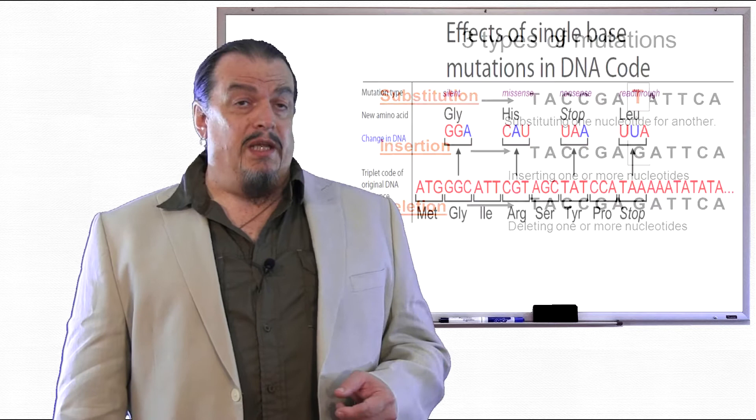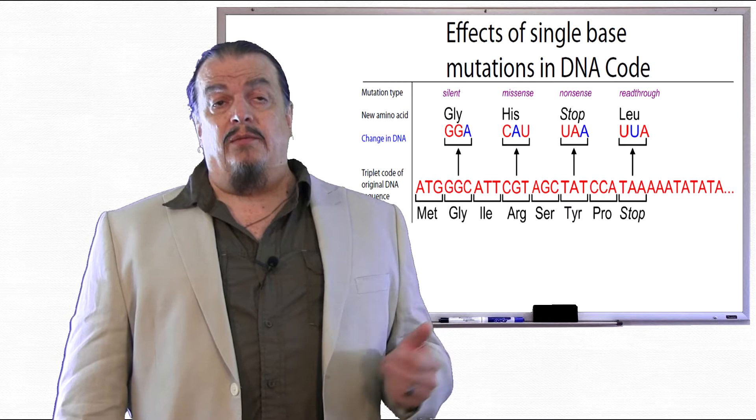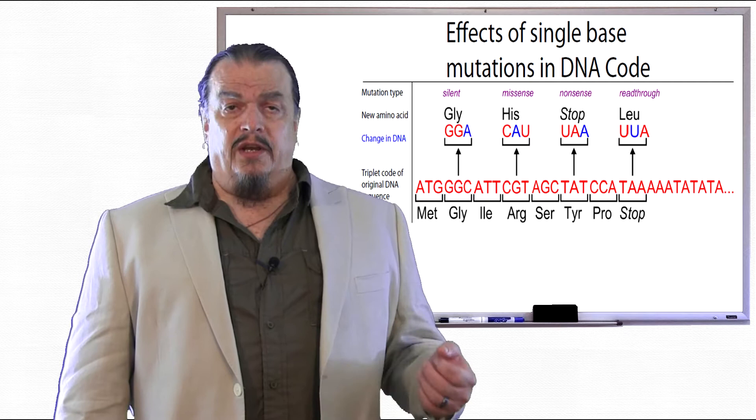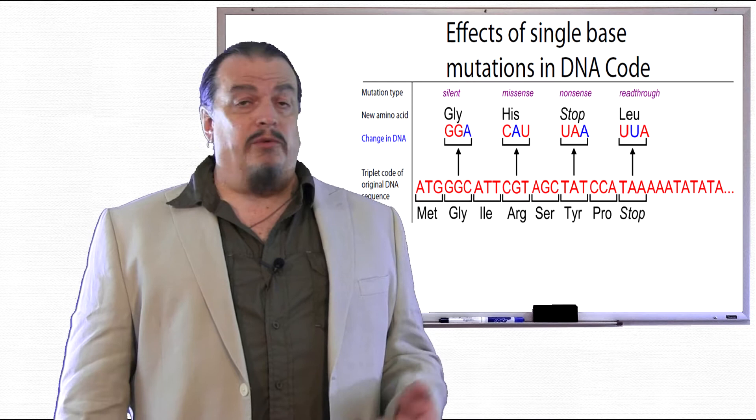The first effect we'll talk about is a silent mutation. If you look at this diagram in your codon chart, GGC codes for the amino acid glycine. But if adenine is substituted for cytosine, the codon becomes GGA, which still produces glycine. This is why it's called a silent mutation, because there's been a change, but there's no effect in the amino acid.